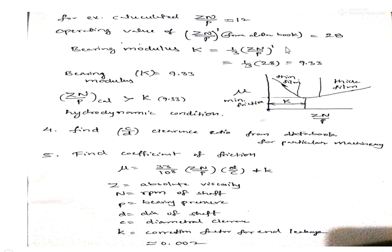The operating value from the data book is kept at least three times the bearing modulus K. So K equals one-third of the operating value. The calculated ZN/P should be greater than this bearing modulus value, ensuring the bearing always operates under full lubrication with no metal-to-metal contact.